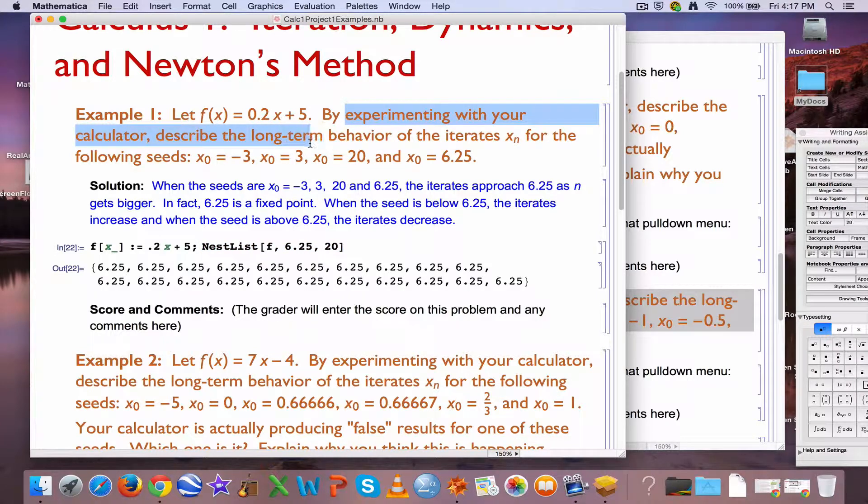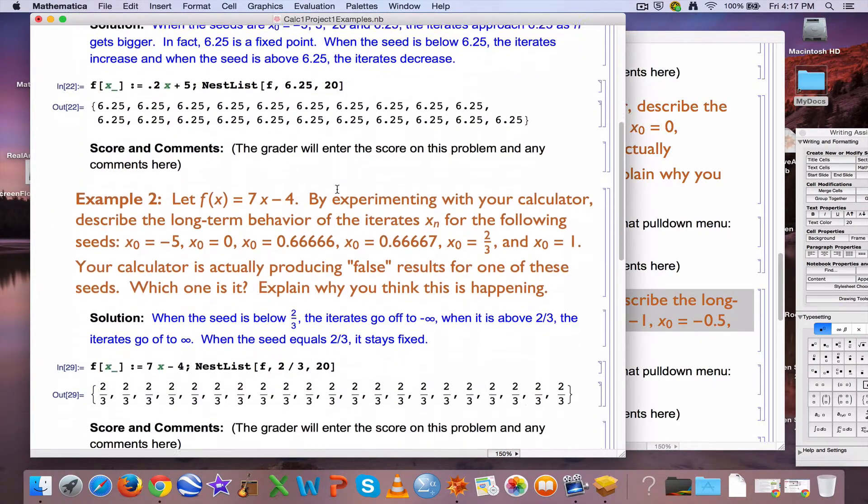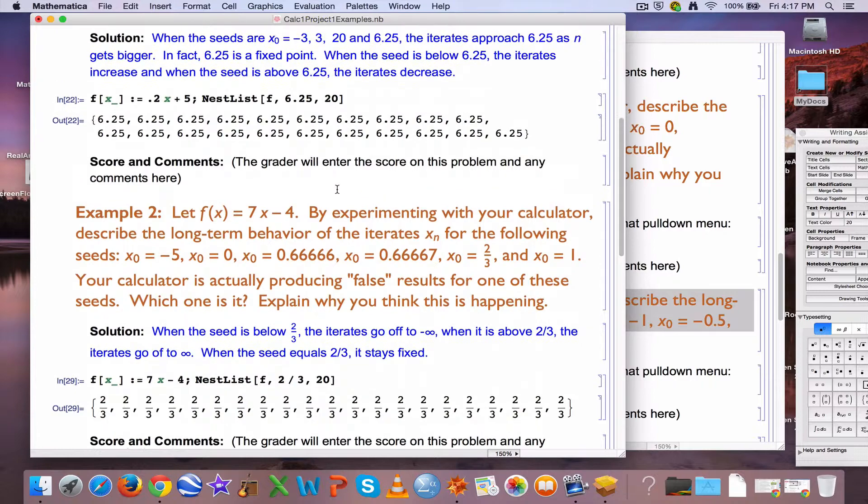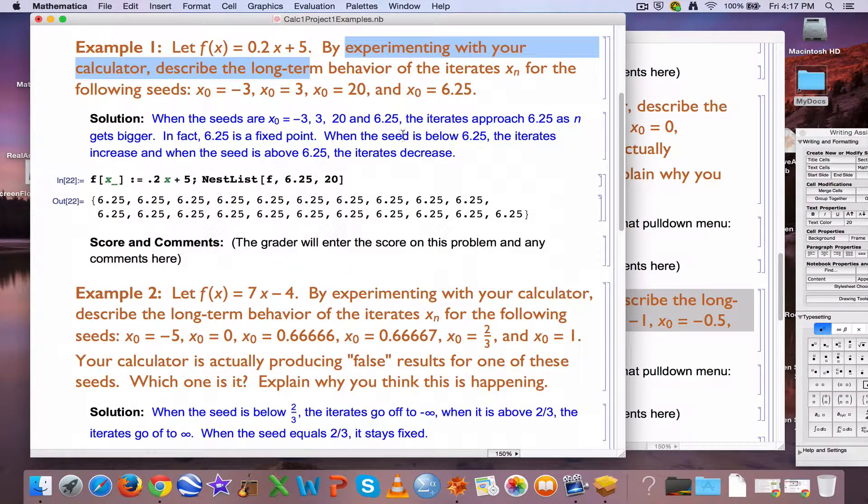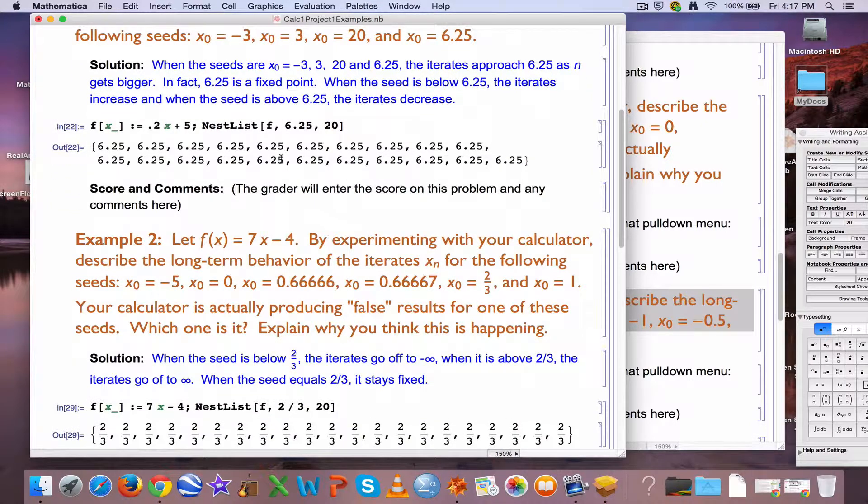Here is the second example, and you can see what happens. In both of these examples, there was a fixed point. 6.25 or 25 fourths was the exact fixed point for this function. It stayed the same. When you plug in that input, you get the same number as output.